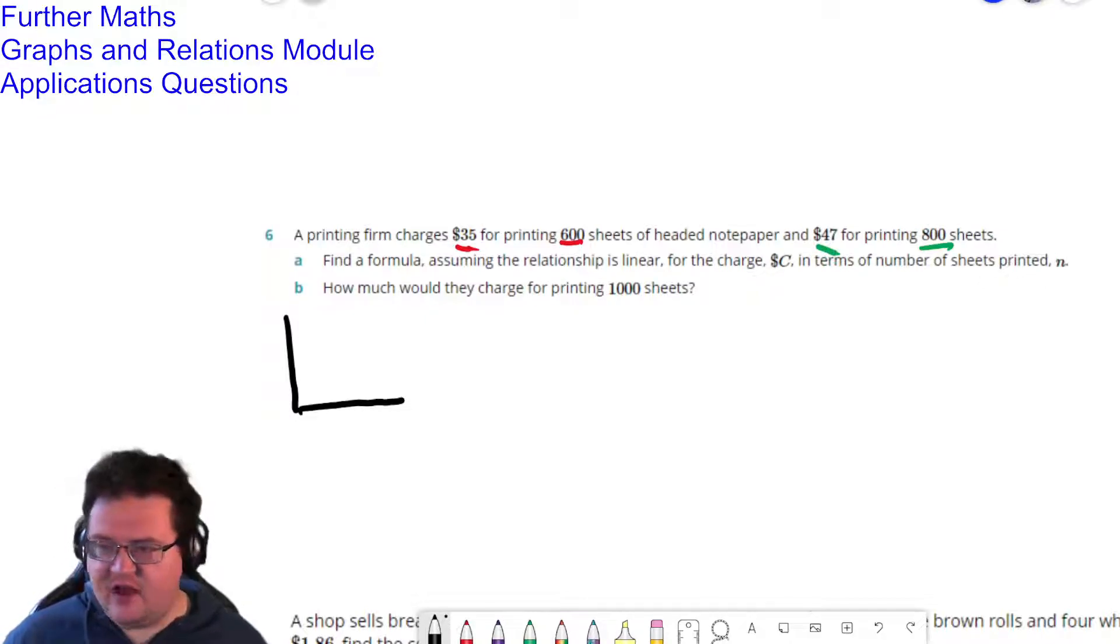So the x values, so the charge would go along here. So that's my y values. And then the number of sheets printed n is going to go along the bottom here. So that means that I'm going to be doing x values involving the n sheets. So I'm going to have x1, y1, and then I'm going to go x2, y2.